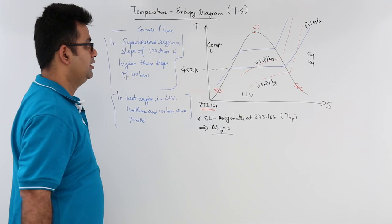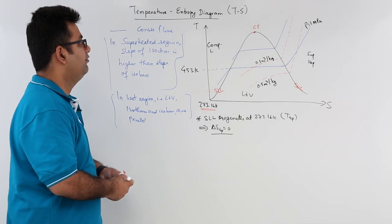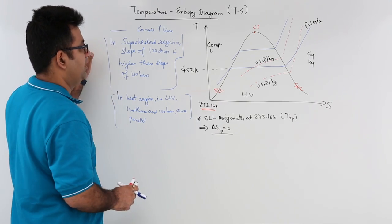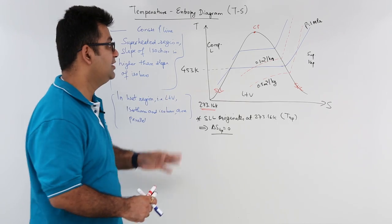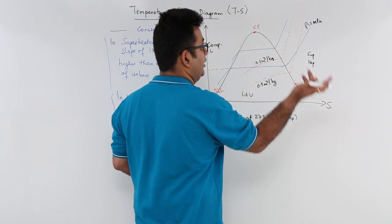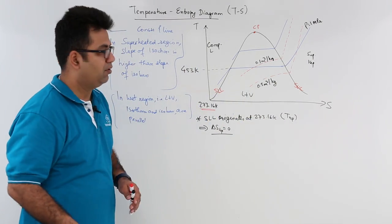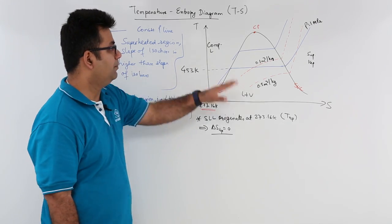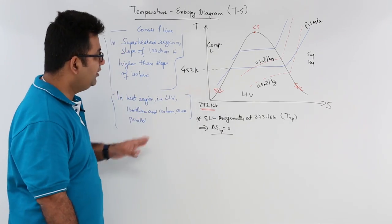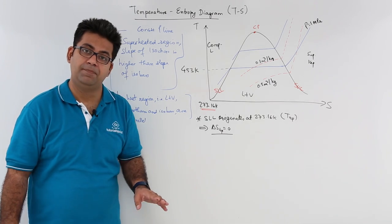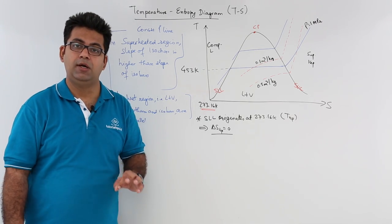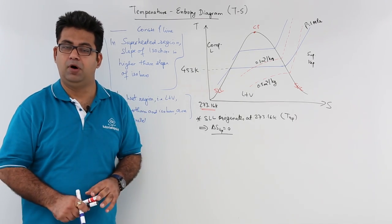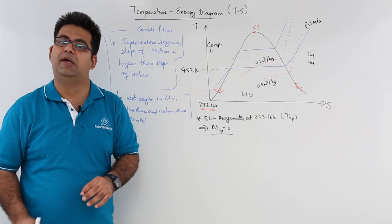So these are some properties of understanding a temperature entropy plot and recognizing what these lines represent. I hope you understood this small video on T-S plot and the various components in the T-S plot. Now let's move on to the next plot in the next video which is called a Mollier diagram or the enthalpy entropy diagram.